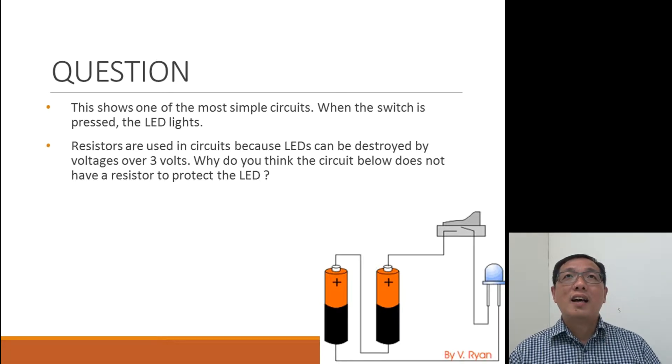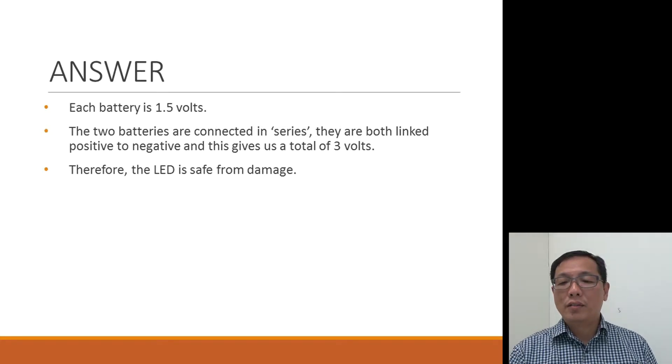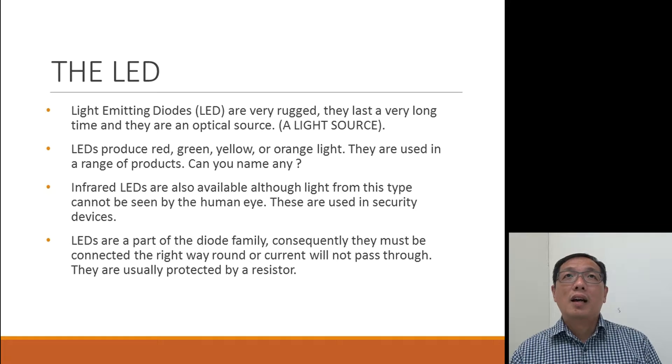Because the answer is, each of the batteries only 1.5 volts. So we have two of them in series, give me a total of 3 volts. And then for anything below 3 volts, it's okay to use the LED directly without using a resistor.